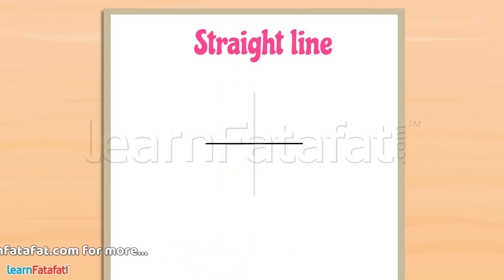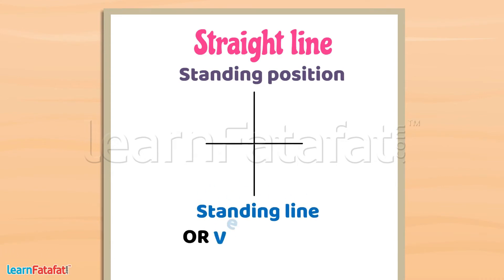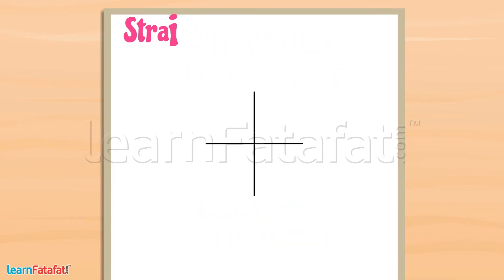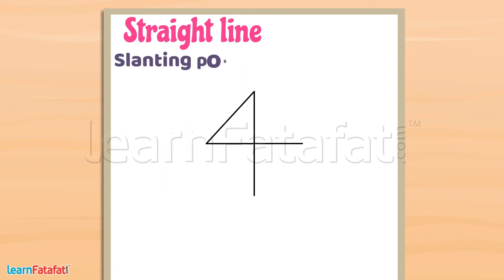This line is in a standing position, so it is called a standing line or a vertical line. Now let's draw a straight line like this — this line is in a slanting position, so it is called a slanting line.